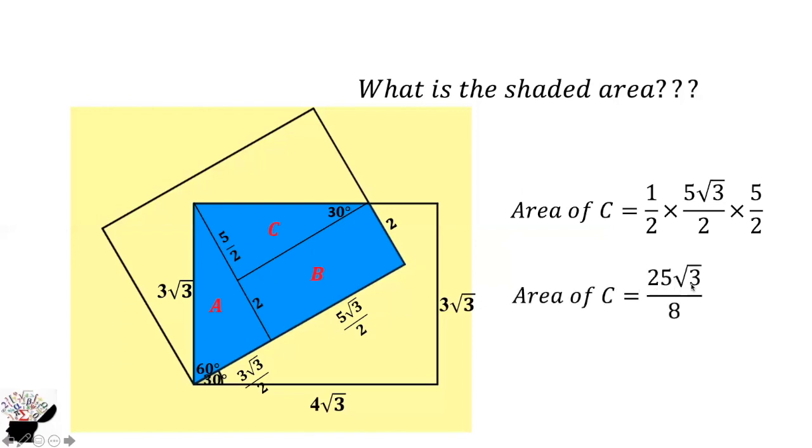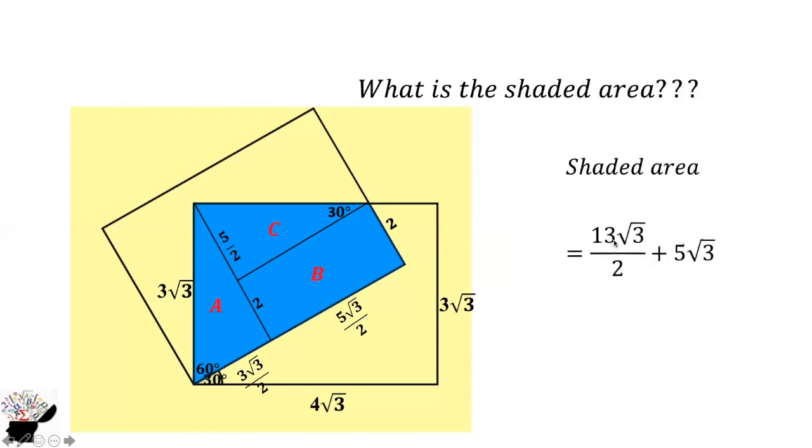Combining all three, we get 13√3/2 + 5√3. Solving it, we get the final answer of 23√3/2.